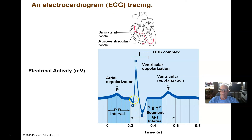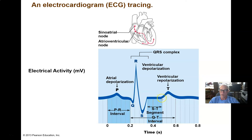Once the wave of depolarization enters the ventricle, it produces this huge deflection — now we're talking about a major number of heart muscle cells, way more than the atria — and we get this big QRS complex. Then the whole ventricle remains depolarized for a long time during the plateau phase, with cells all depolarized, calcium entering, cross bridges cycling, and the heart contracting, until finally the calcium channels inactivate and potassium channels open and repolarize the ventricles. The T wave represents a wave of repolarization of the ventricles, and now we're back at baseline.